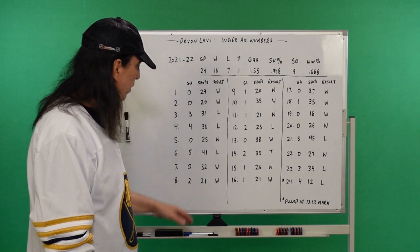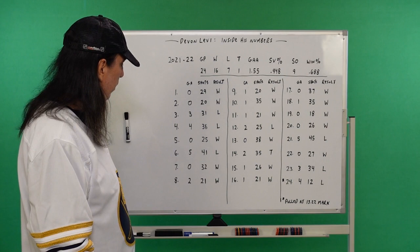So that rounds out basically the first third of his season right there with five shutouts in eight games. Alright, let's look at this.